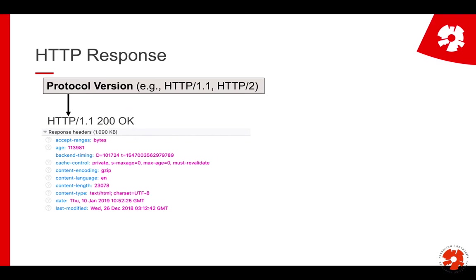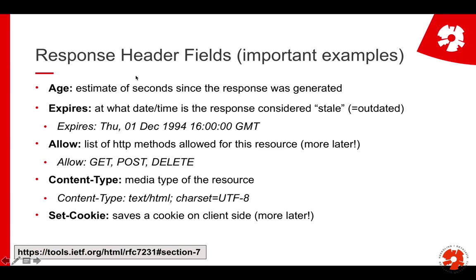The response headers may be slightly different from request headers. A typical one is Age — an estimate of how much time has passed since this response was generated, giving you information on how long it took to travel from Google or Wikipedia to your computer. There's also an expiry field: if I get the response after Thursday the 1st of December 1994, I should throw it away — it's no longer valid. For example, if you request current weather and get it two days later, it's not relevant anymore, so you'd want an expiry date.